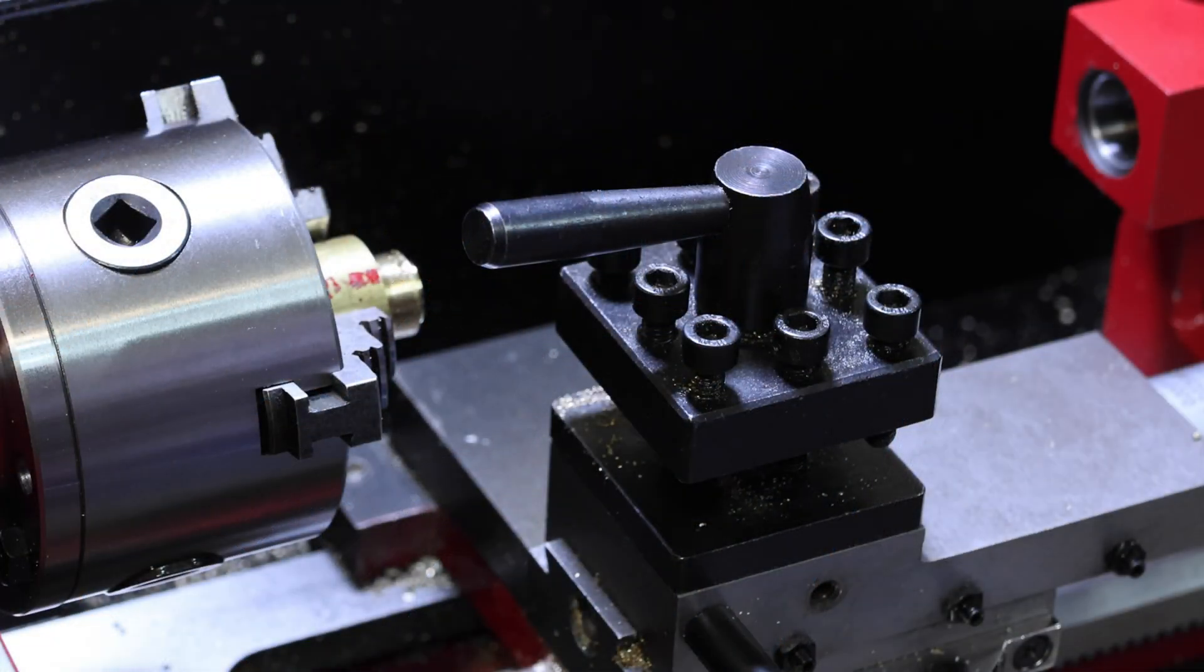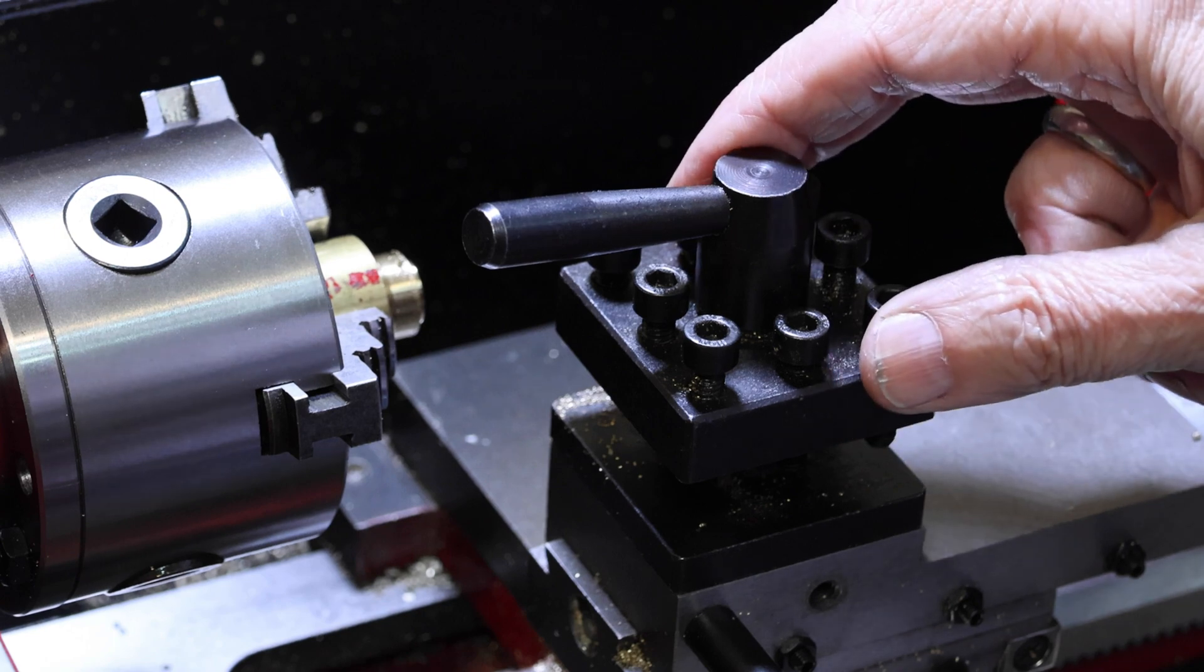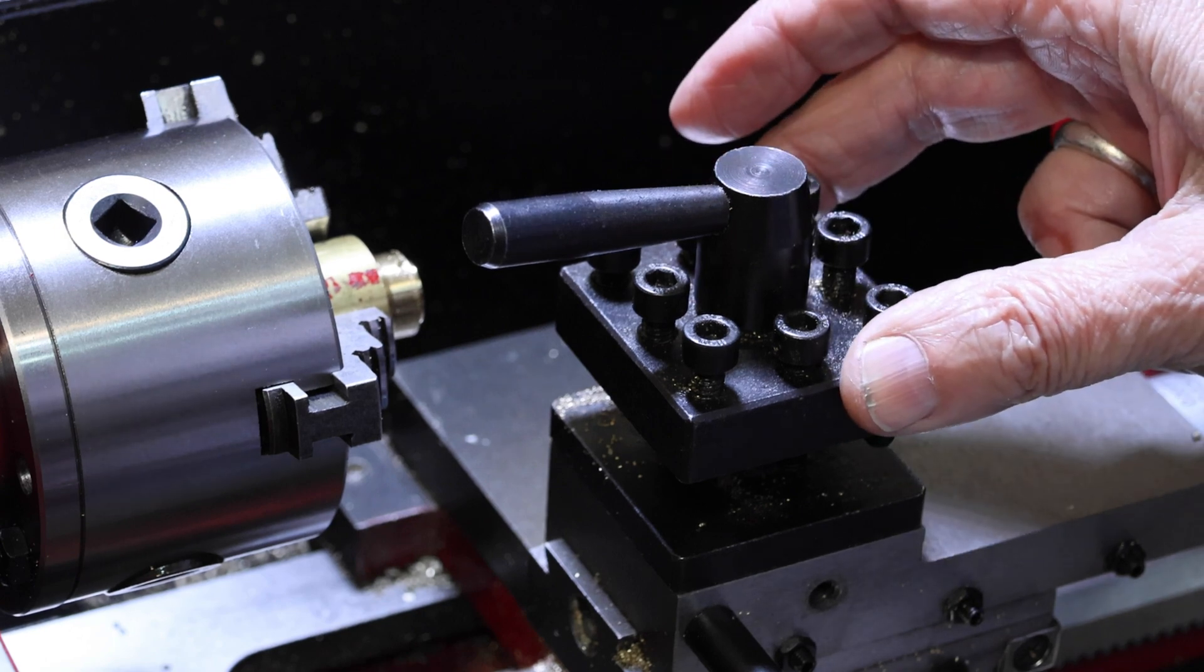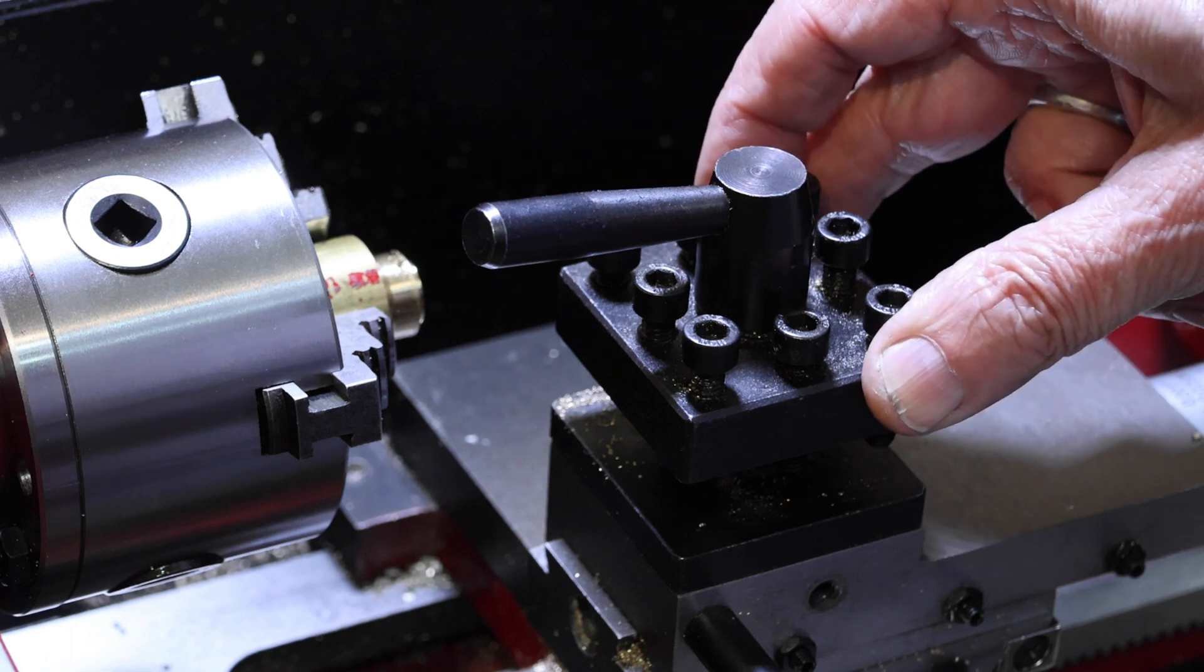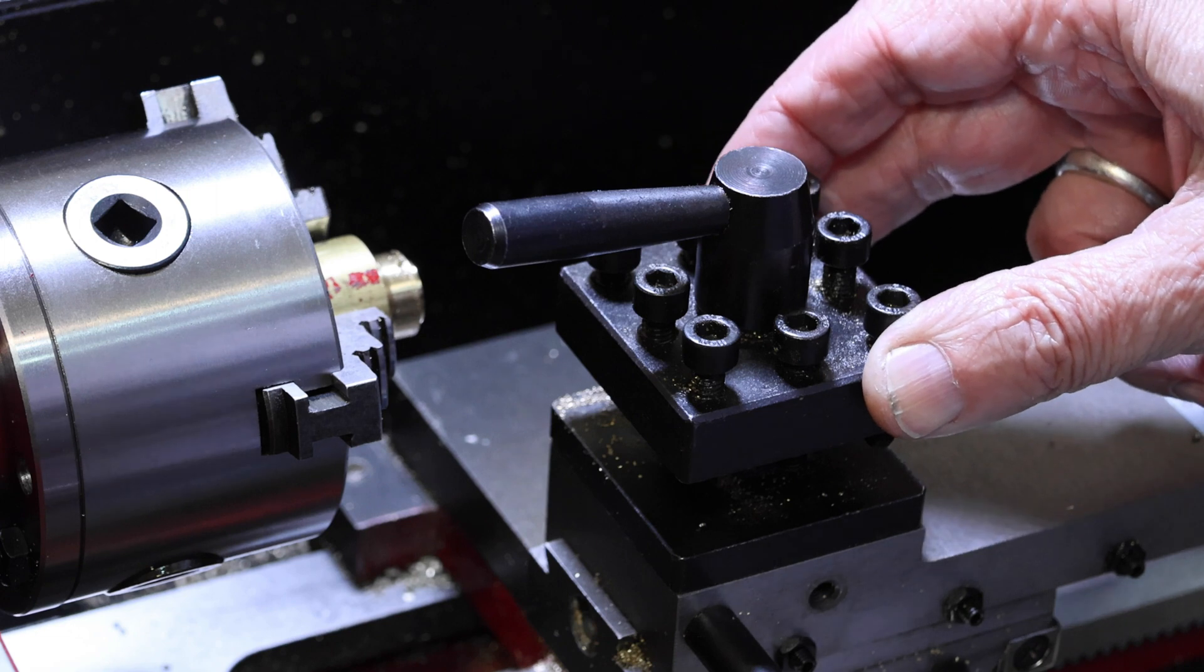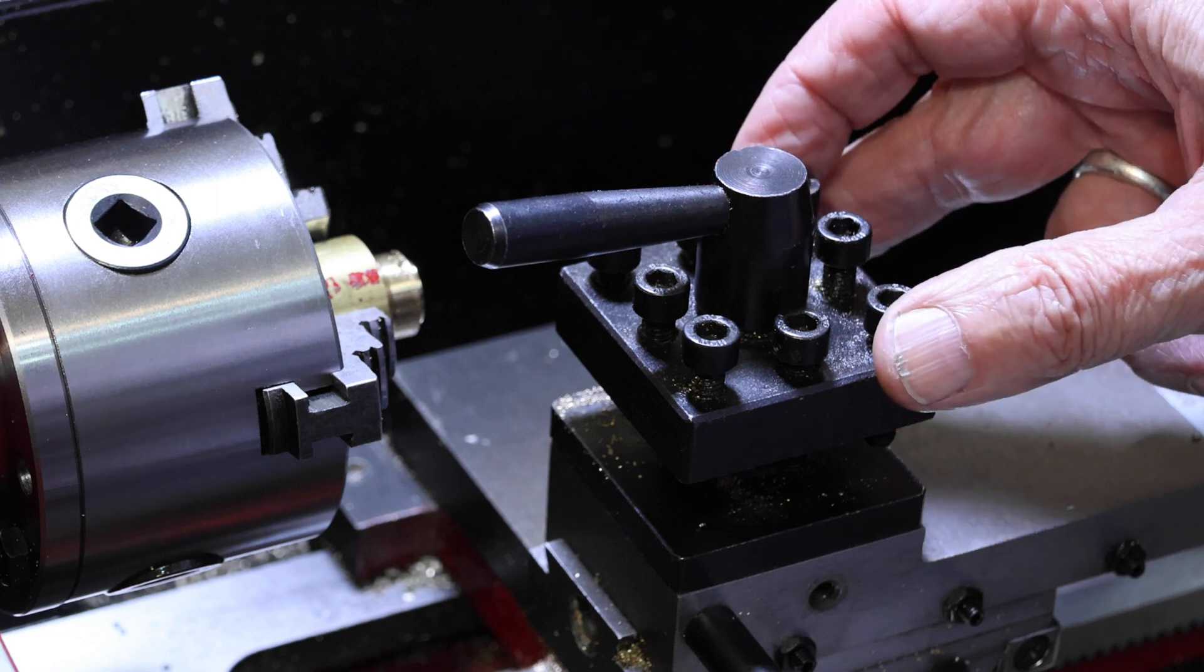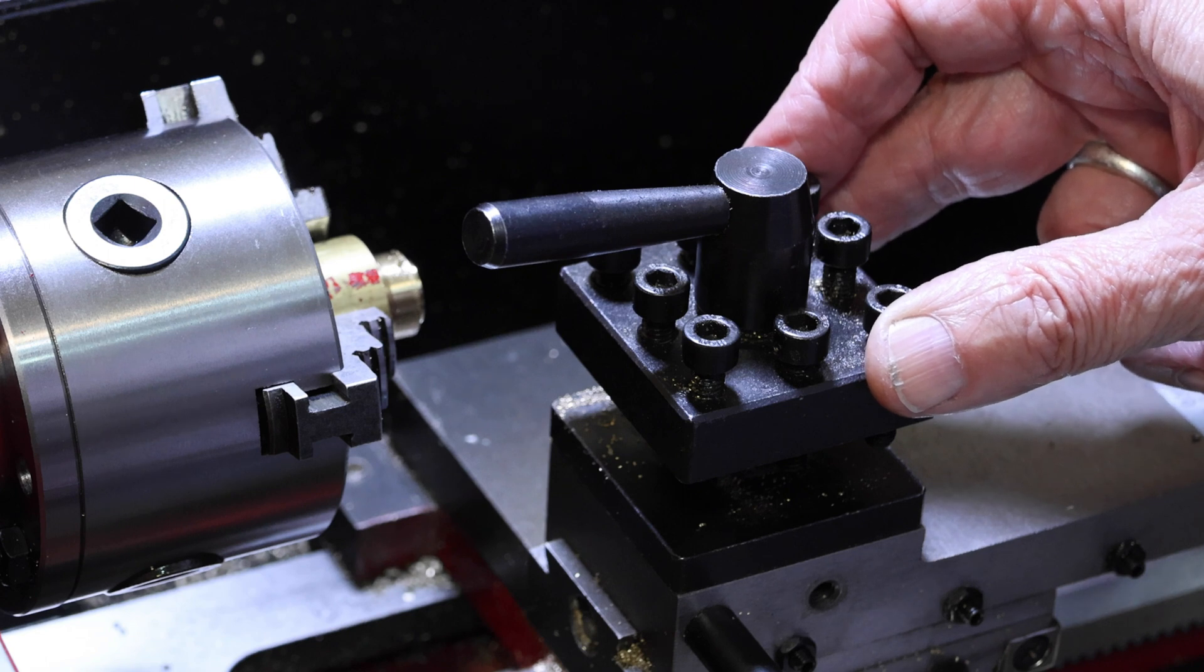Alright so let's go ahead and change out this tool post. Now the reason I wanted to change the tool post to the quick change type is because this one, this is the tool post that came with the machine and it works but it's very difficult to adjust the tool height. Basically you have to shim the tool every time you want to use it.